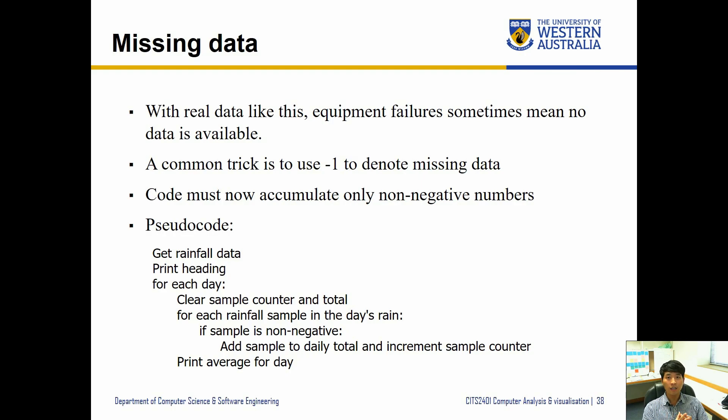To display, if there has been a negative value, then what we want to do is not display that. So our pseudocode essentially means some not particularly syntax-correct code, but for us to understand by reading a line at a time. So what we want to do is get the data, print the heading, and for each day we want to clear sample counter and total.